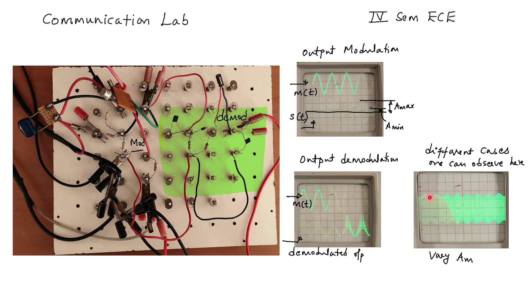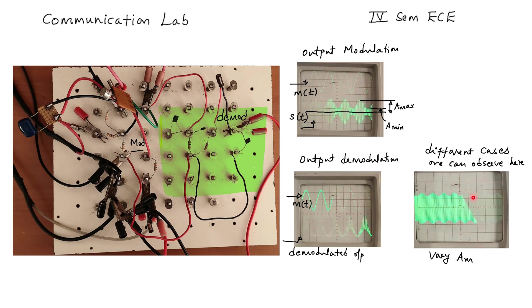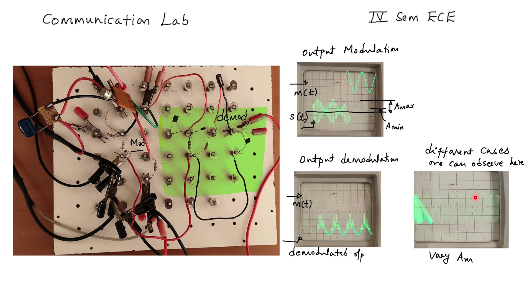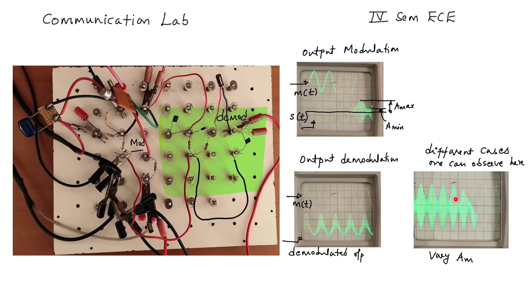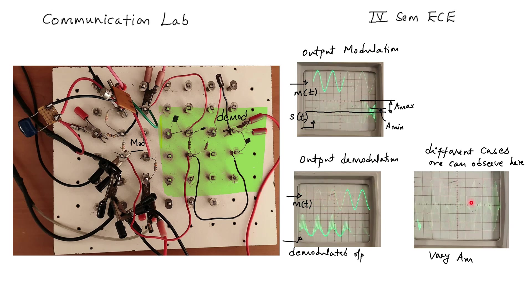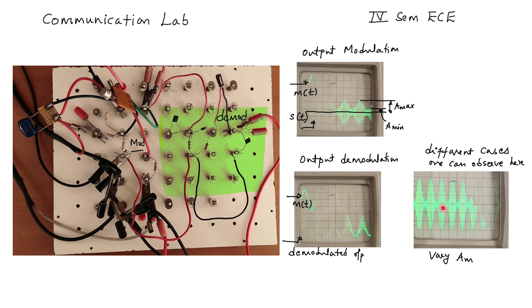This is under modulation. Now we are increasing the message signal amplitude to show ideal modulation and over modulation.